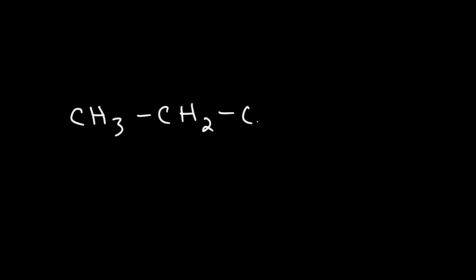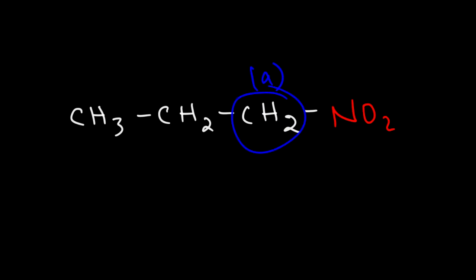The next thing we need to talk about is the position of the protons relative to an electron-withdrawing group in a molecule. Here we have 1-nitropropane, and there are three different types of protons. The two protons in the CH2 group nearest the nitro group will generate one type of signal, then the middle two protons will generate another, and then the terminal methyl three protons will generate a different signal. So in the NMR spectrum, we'll have three different signals for this molecule. Which proton will have the highest chemical shift and appear the most downfield — signal A, signal B, or signal C?